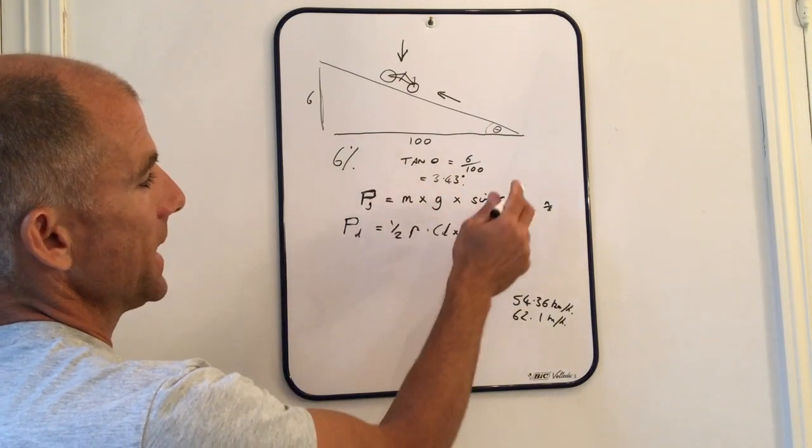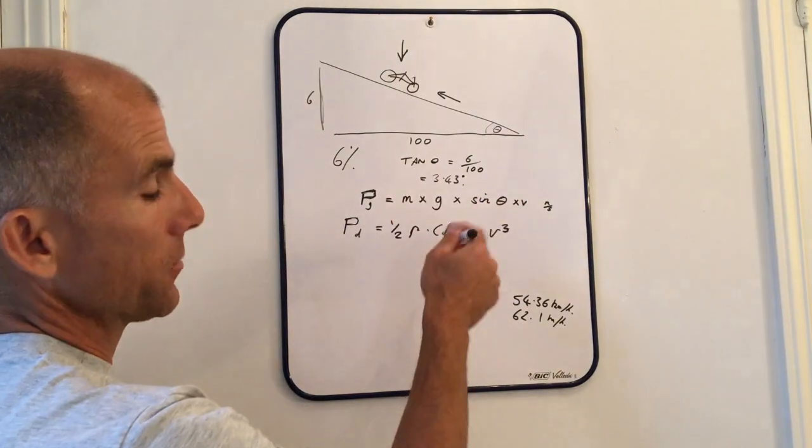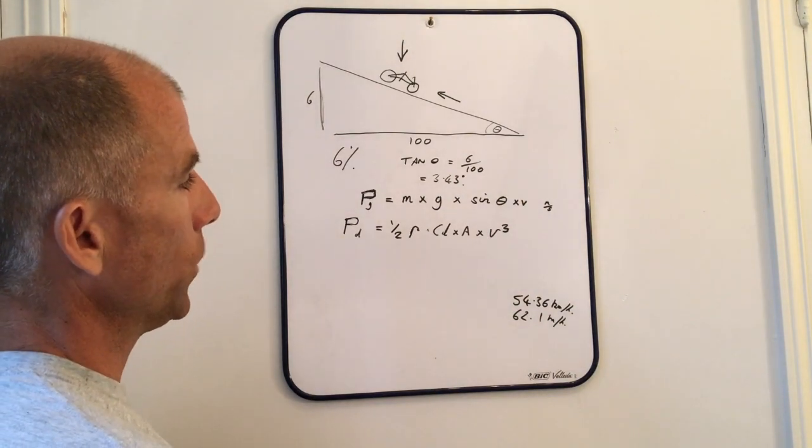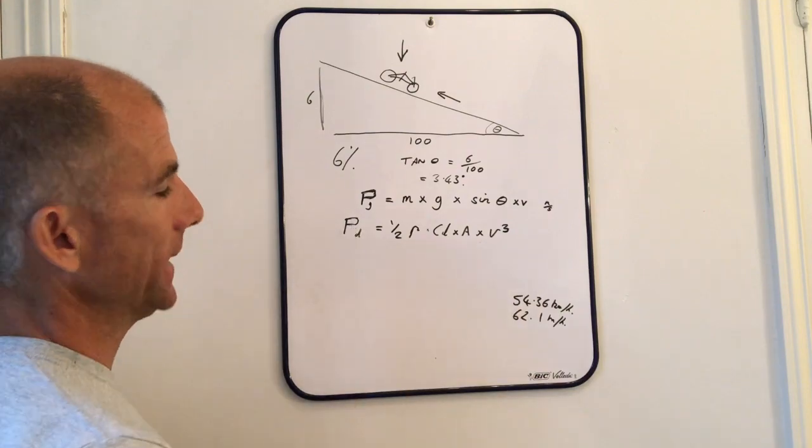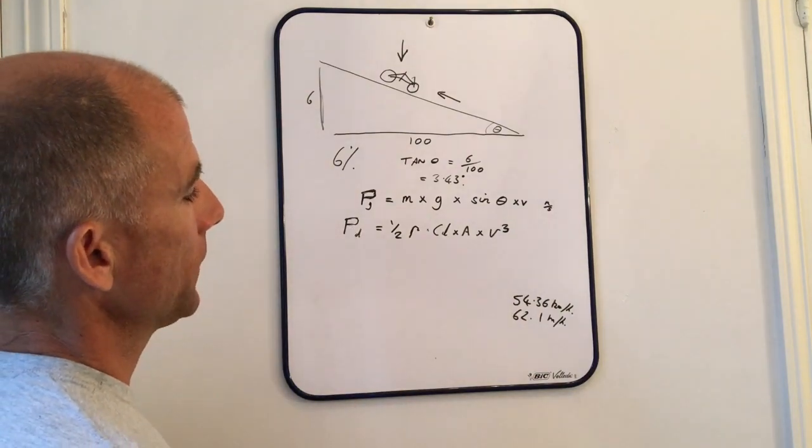We know that the power figure for drag is simply cubed here. Again, these two powers in equilibrium will provide you with a constant speed. And we can then add on extra power from pedaling and see what effect that has.